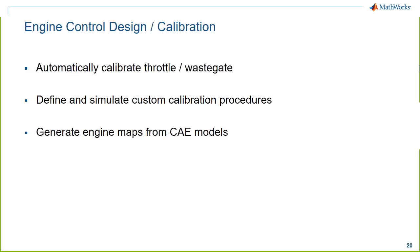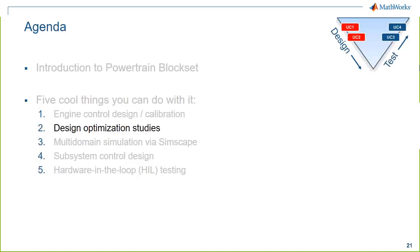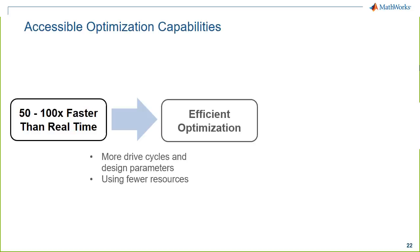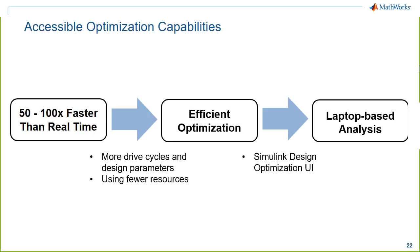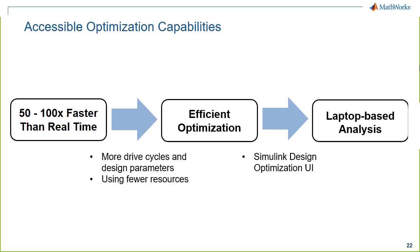Cool thing number two: design optimization studies to explore a wider search space. Because vehicle simulations run 50 to 100 times faster than real time, you can perform efficient optimization — looking at more drive cycles, more design parameters, or using fewer resources. You can run these analyses on a laptop without a computing cluster, and tools like Simulink Design Optimization provide a user interface so you don't need a strong coding background.